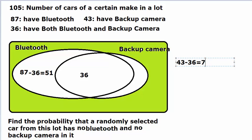So what we have then is that seven of these have backup camera but no Bluetooth. Now we want to find the probability of the number of elements in the green region. So let's compute the elements in the green region. Total number of cars is 105.